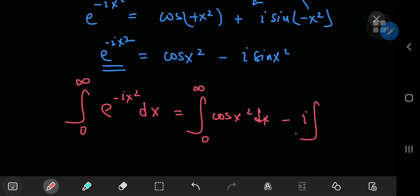So if we can solve the left hand side, if we can integrate the exponential function, then we can separate it into real and imaginary parts to get the answers for the two Fresnel integrals.